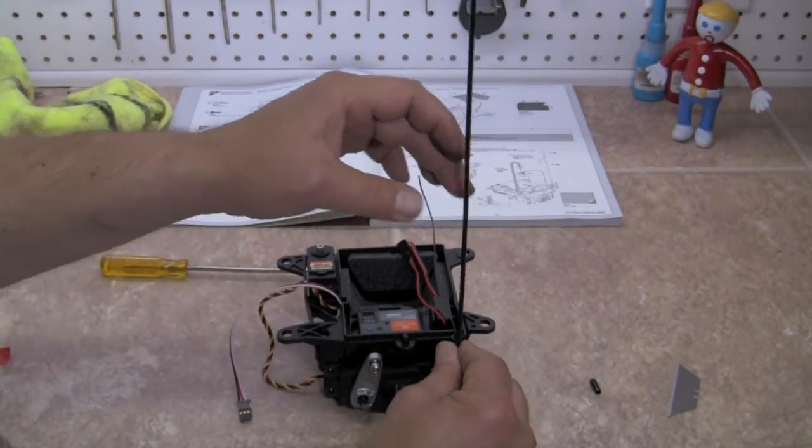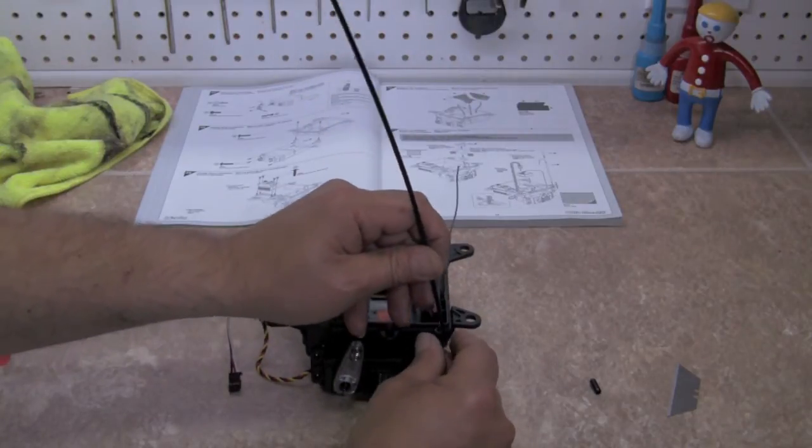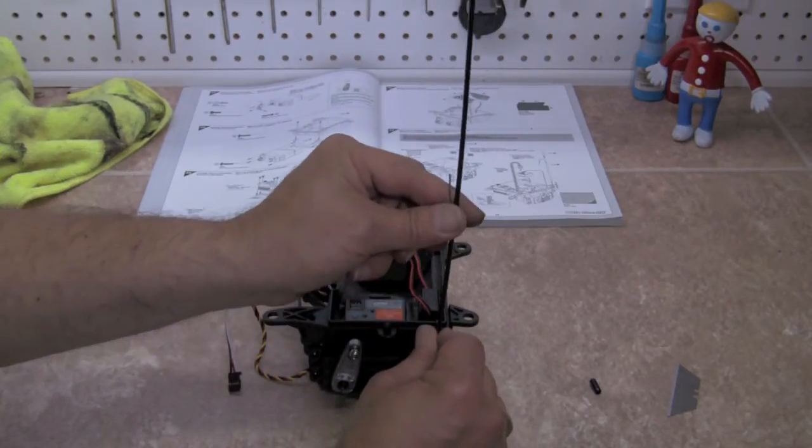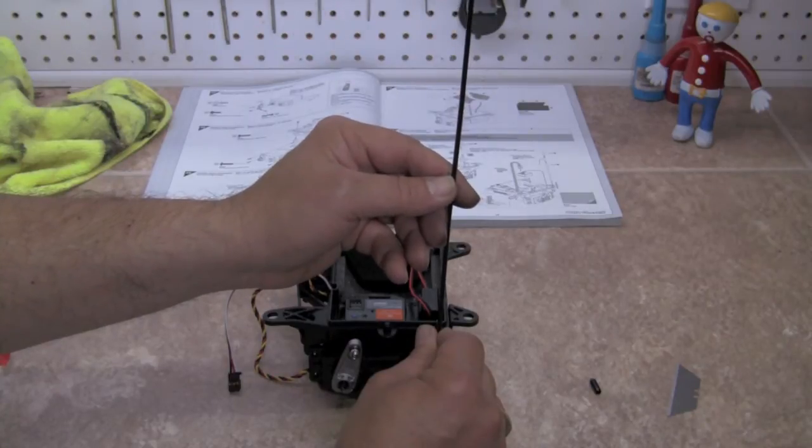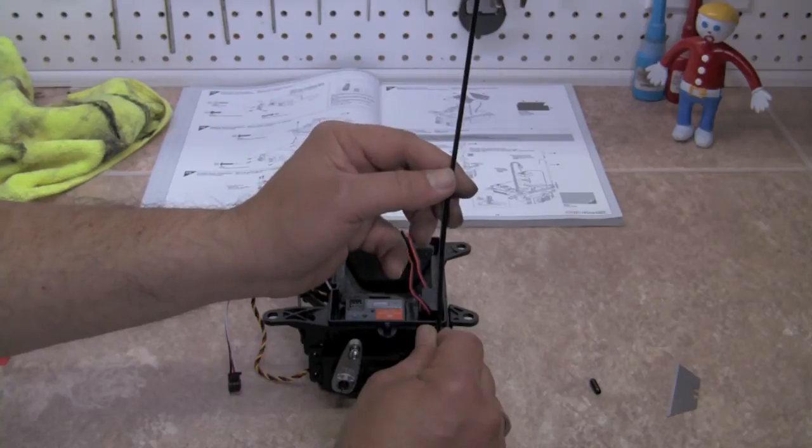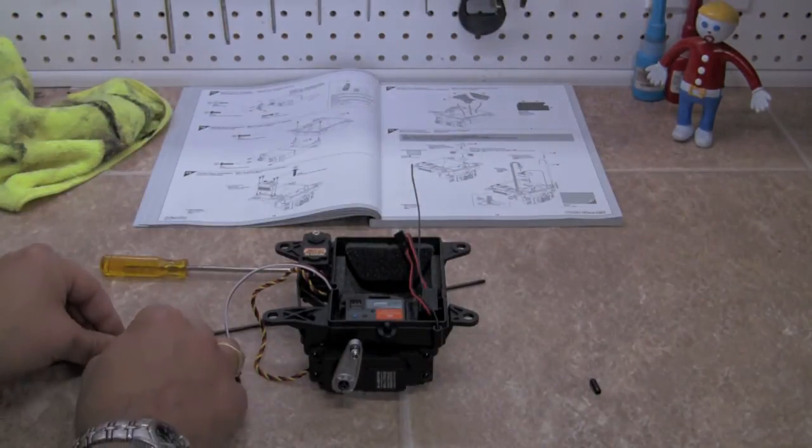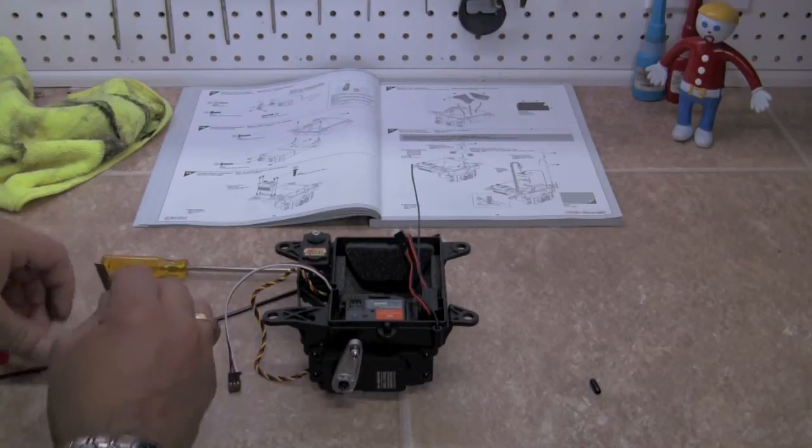I'm going to measure about an eighth of an inch down, measure up for the antenna, and I like mine just to sit inside. I don't, this particular one I don't like to fold, so we're going to measure that and we're going to use our hobby knife and cut the antenna off.